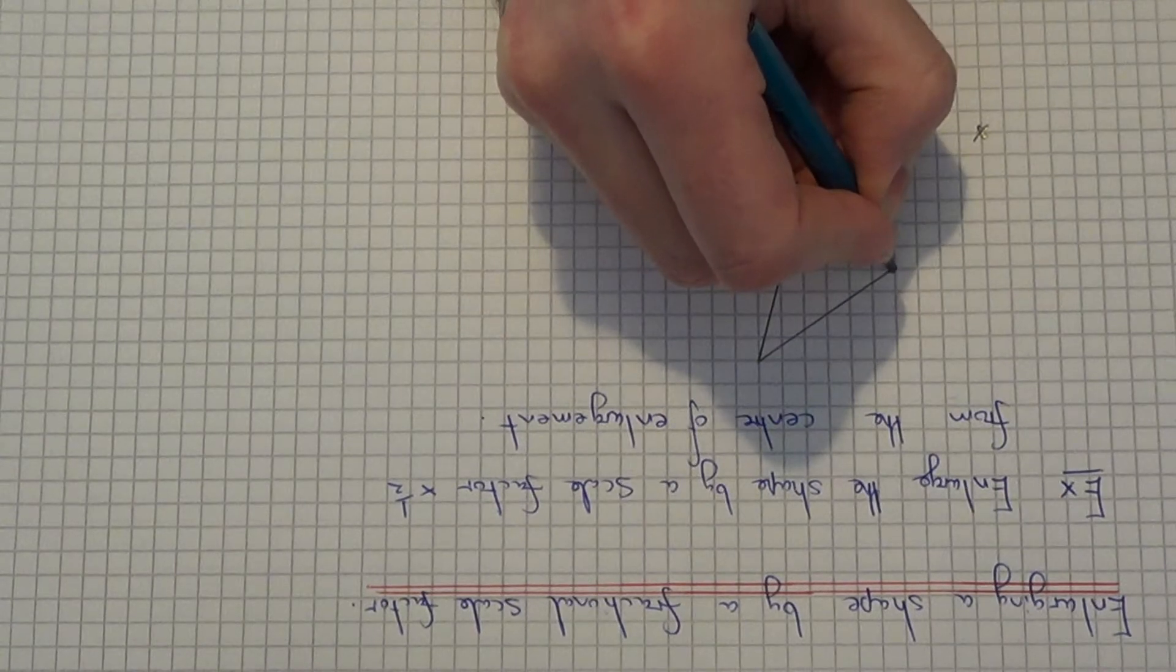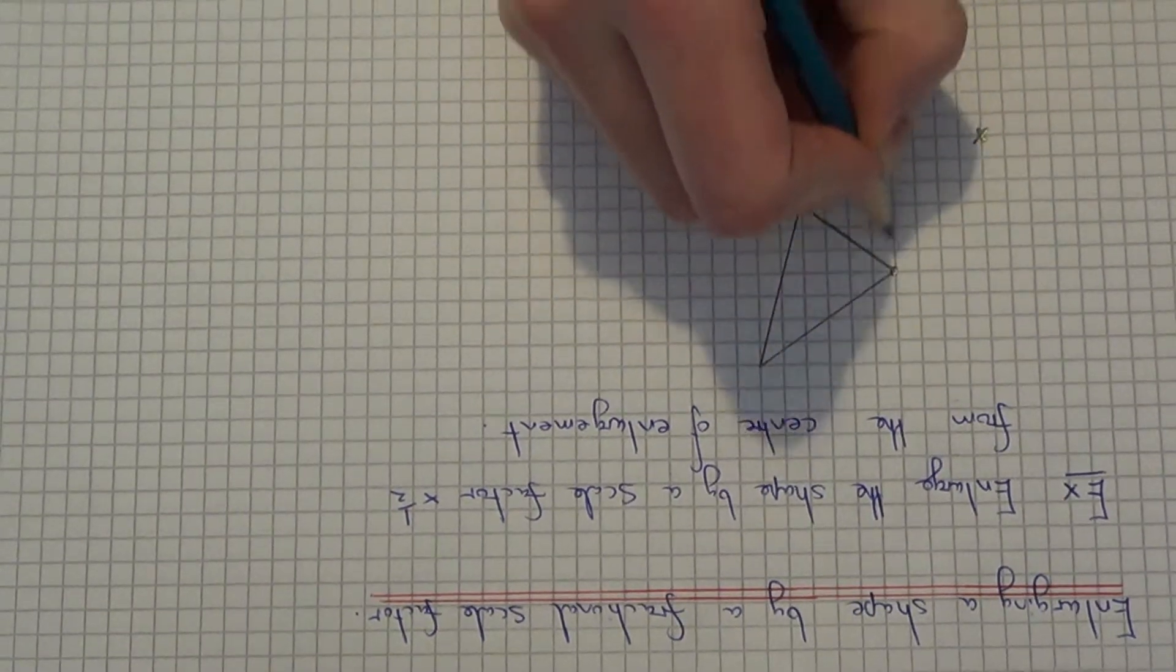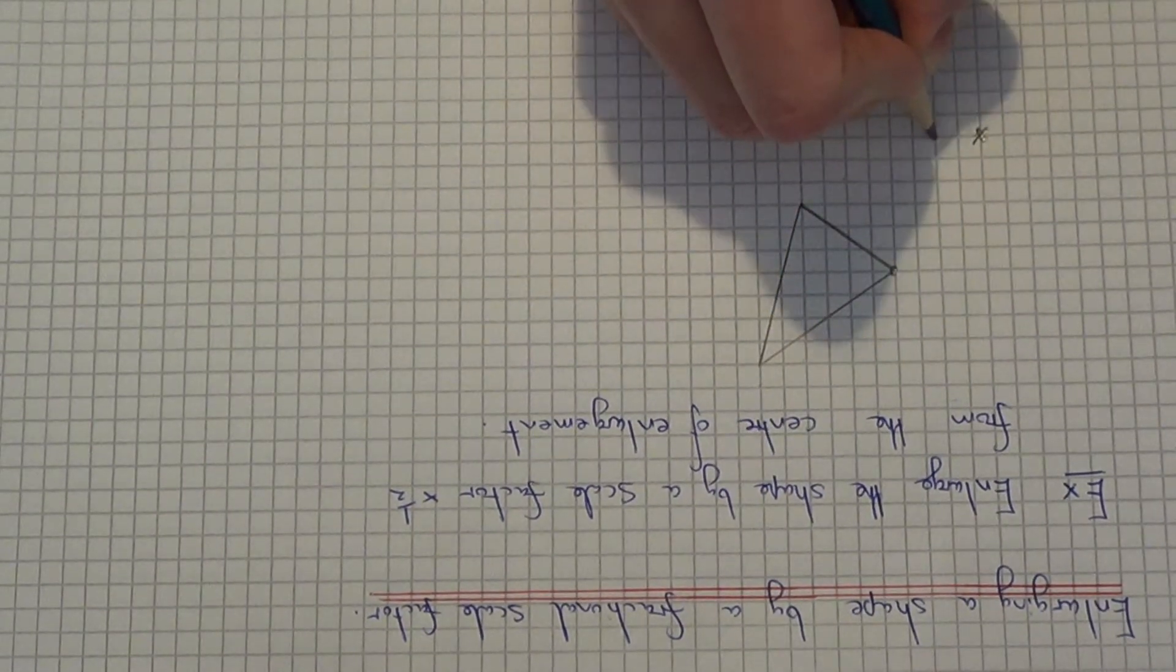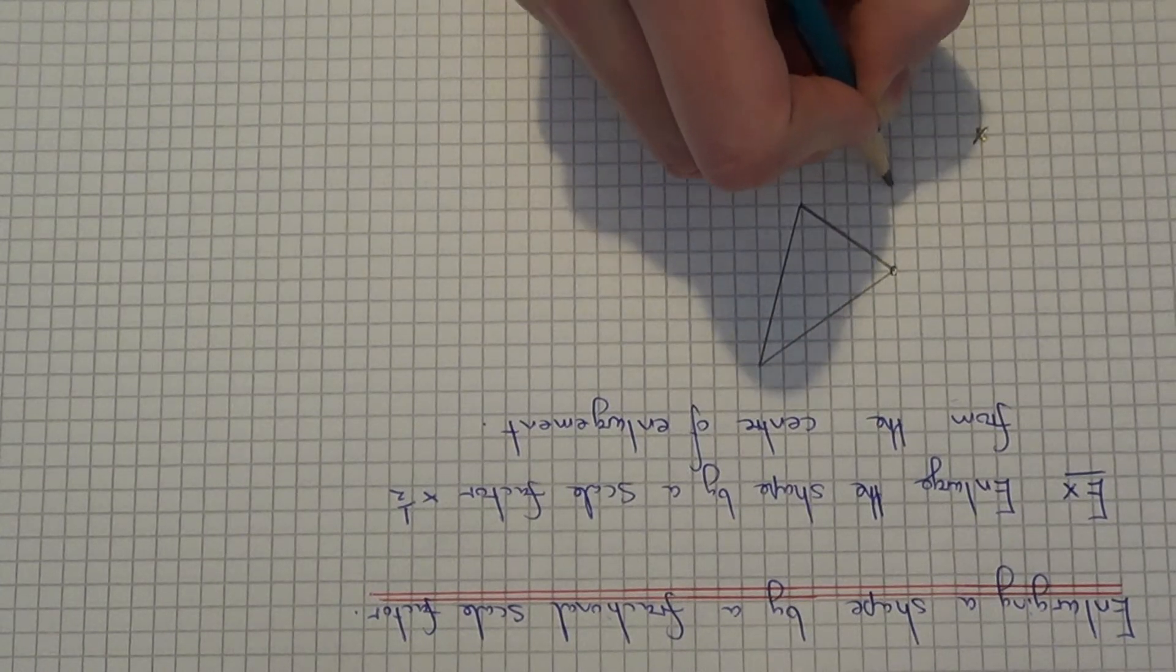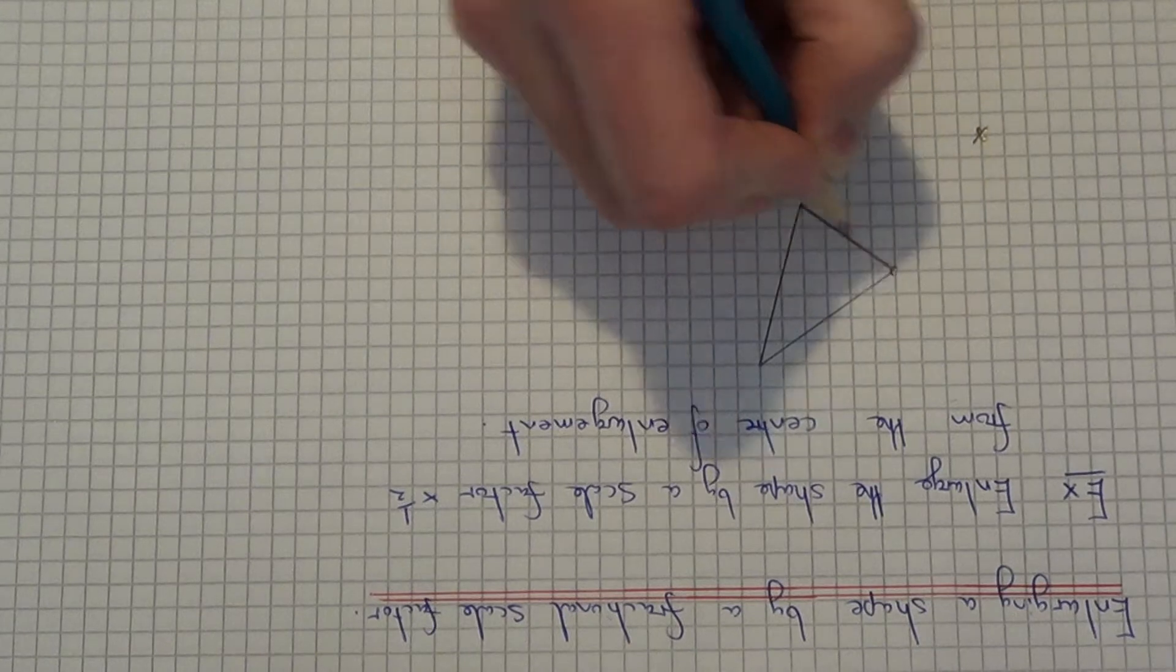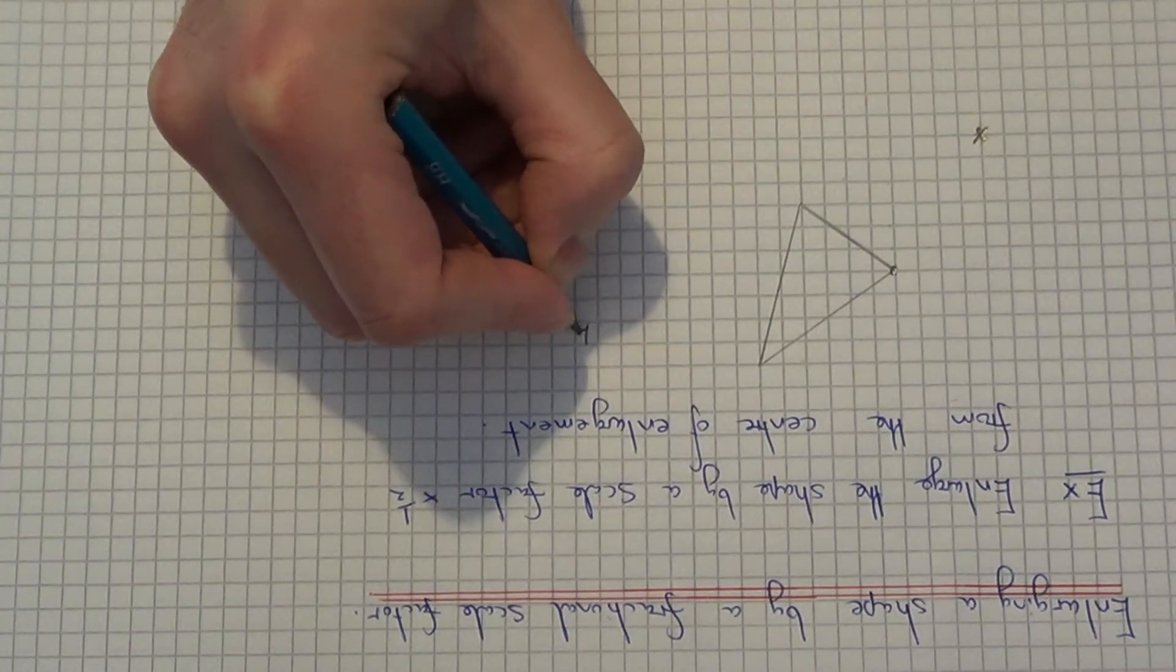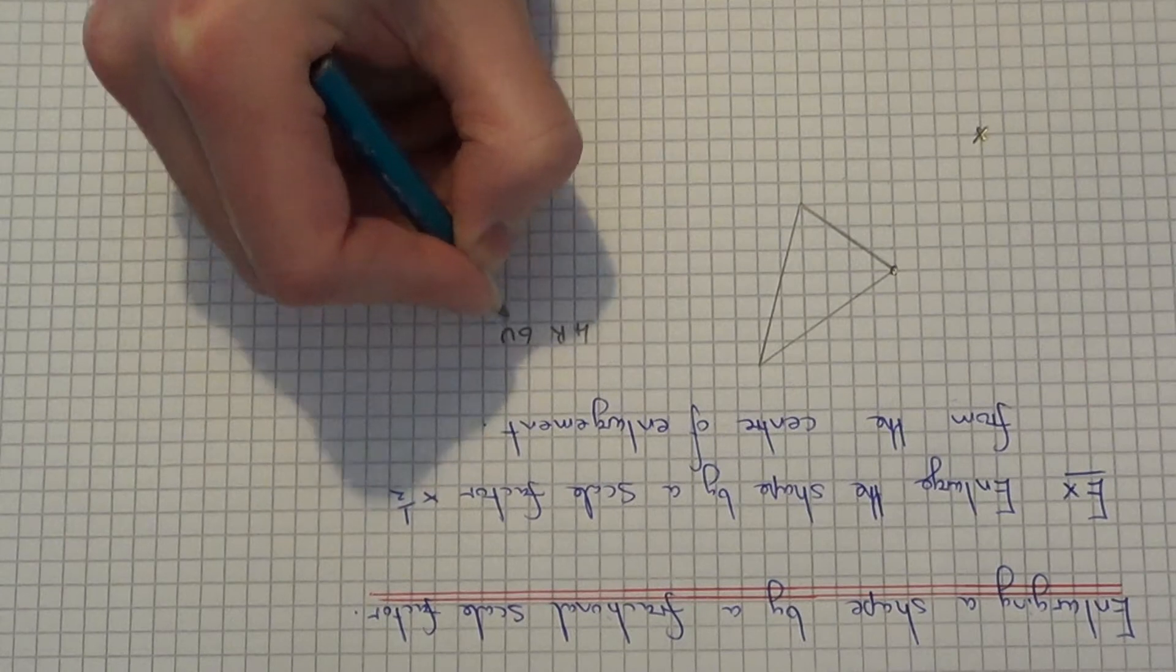So let me start with the closest corner here. So from the centre to this corner it is 4 squares right and 6 up. So let me make a note of that, 4 right, 6 up.